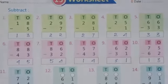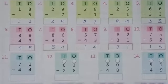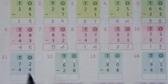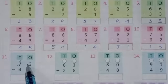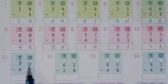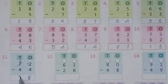See the next question number 11. Here 2 minus 4 is not possible, so borrow from this digit — this will become 6 and here will be 12. Now 12 minus 4 equals 8. Then 6 minus 4 equals 2.